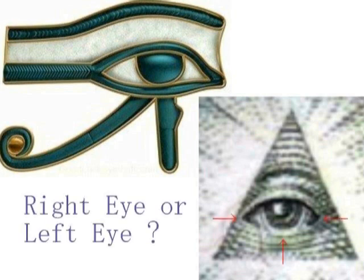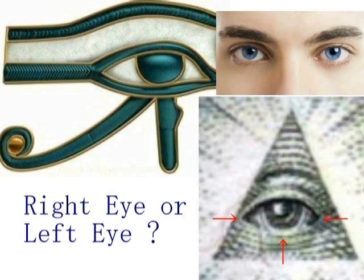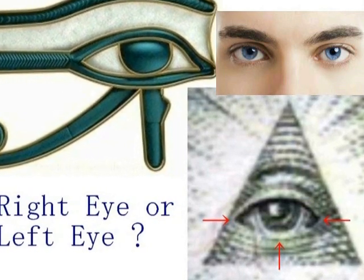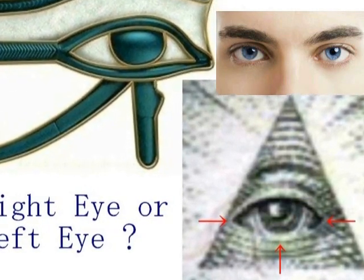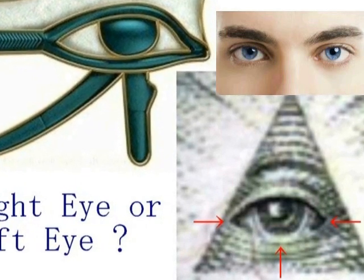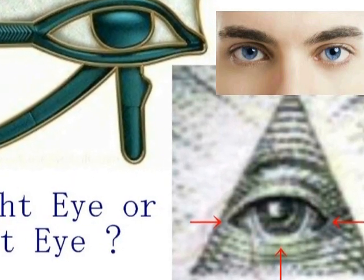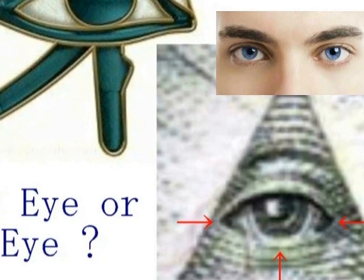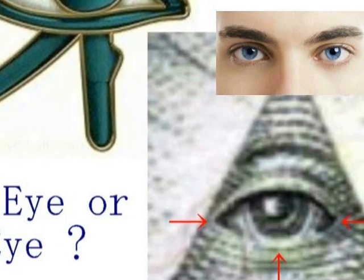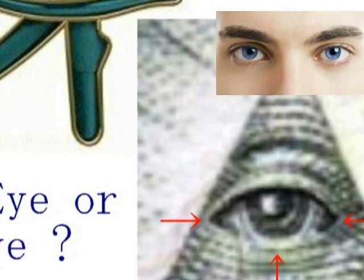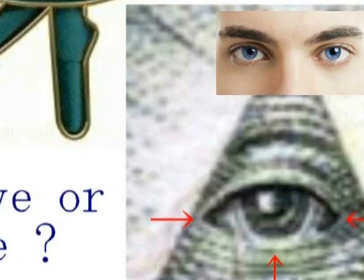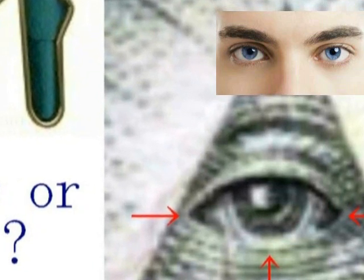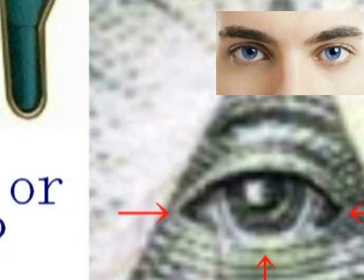もう一度、ホルスの目をじっくりとご覧ください。このホルスの目は右目ですね。向かって左側にある右目ということになります。そして、これが1ドル札の裏にすり込んである、プロメテウスの目、あるいはホルスの目ということになります。これは右目なのでしょうか、左目なのでしょうか。皆さん自身でご判断ください。私は、これはやはり右目と判断しました。目の上まぶたのラインに注意してください。上まぶたが向かって右寄りの方に広く、左の方に細く狭くなっているのがわかります。ですから、これはやはり右目ということになります。